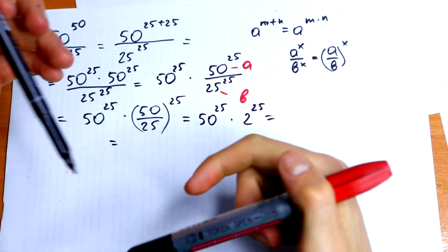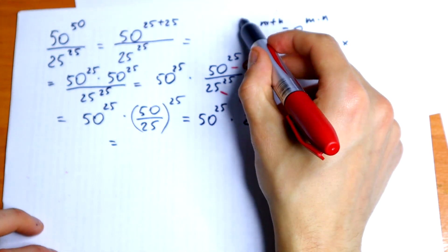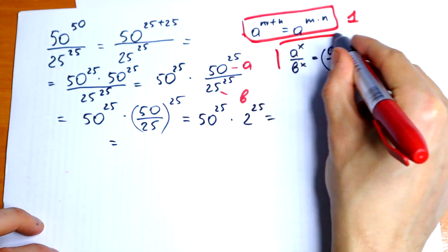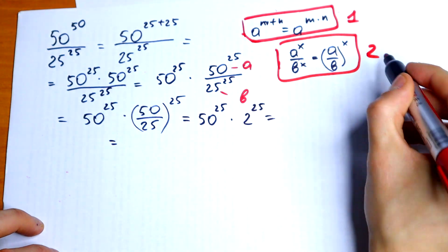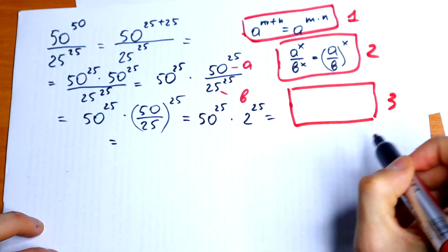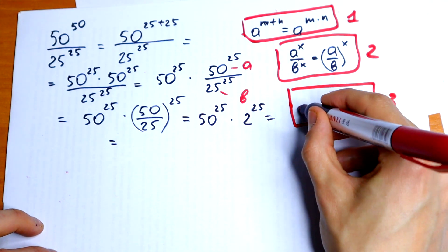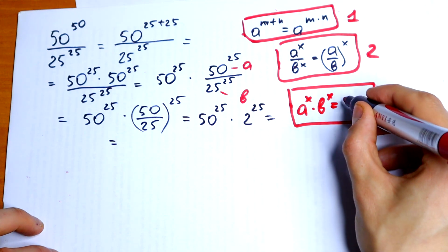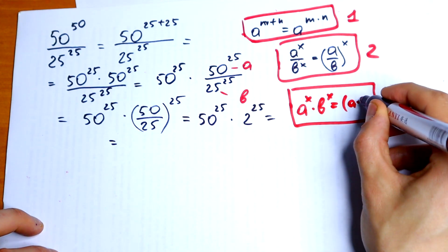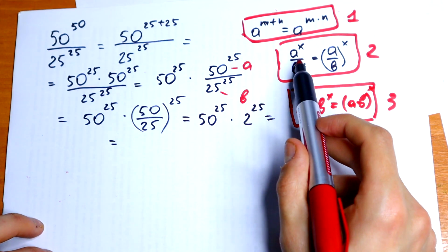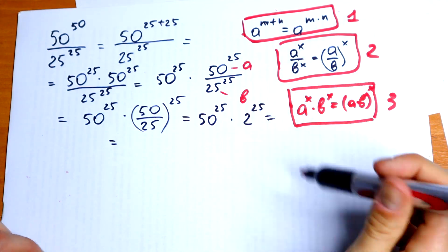What are we gonna do next? For sure we need our third rule. It's our first rule, it's our second rule, and to solve this we need a third rule. If we have a to the power x times b to the power x, I can write it in one parentheses as a times b to the power x. Like that, but a product.